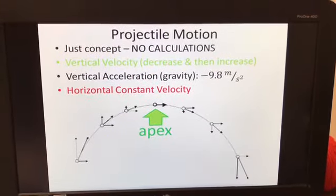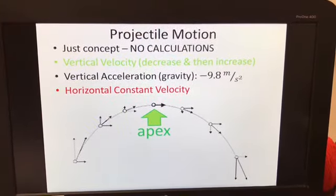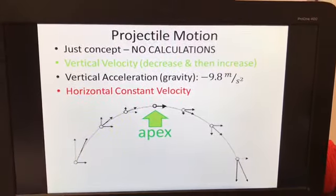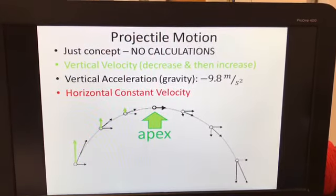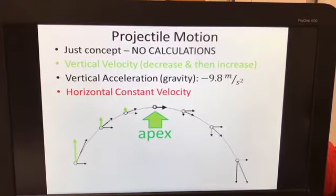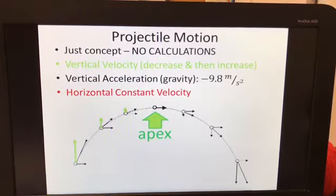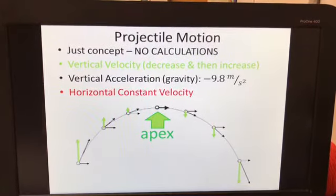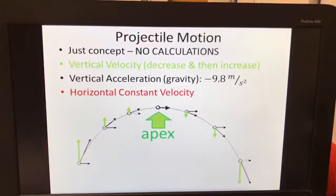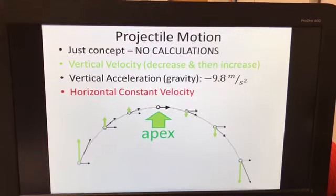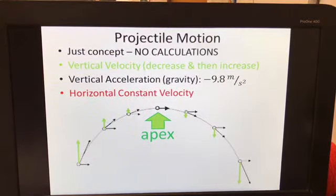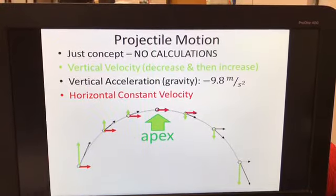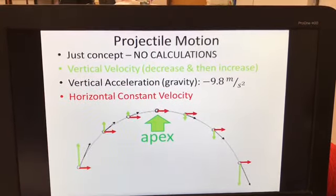All right, projectile motion for the final exam. There are no calculations, just concept questions on this. The vertical velocity decreases as it goes up. And when it's at the apex, that vertical velocity is zero, and then it will increase as it's going back down. The vertical acceleration is gravity, negative 9.8 meters per second squared, and the horizontal velocity is constant. Every second that horizontal velocity does not change.